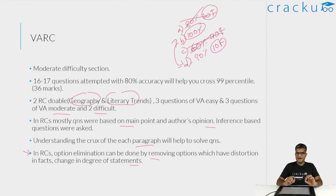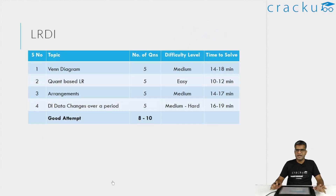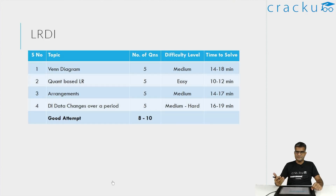Essentially, for RCs it is easier to find which options are wrong, and your accuracy will definitely improve. That is what I did, which is why my accuracy in RCs was pretty decent. Now let us look at the LRDI section. In LRDI there were four sets — a fairly interesting section. I didn't do particularly well in LRDI this time because I made some mistakes reading one of the options in the Venn diagram set, and because of that I wasted a lot of time.